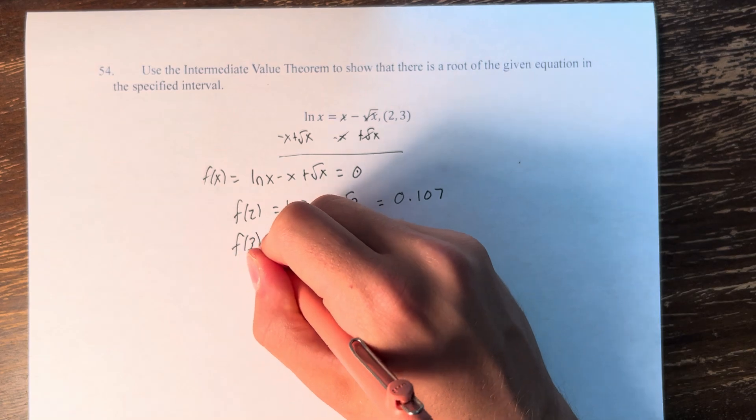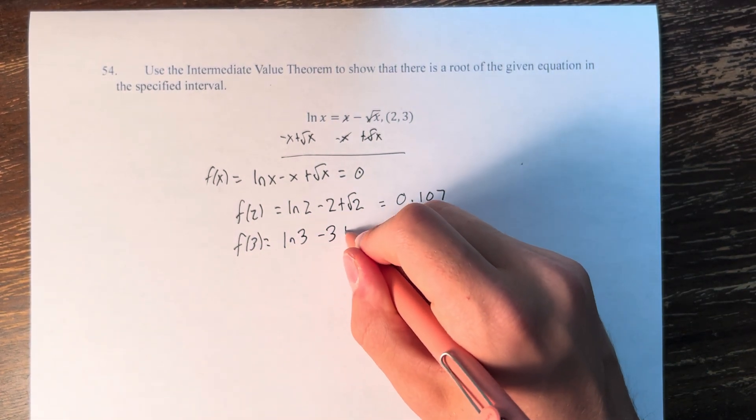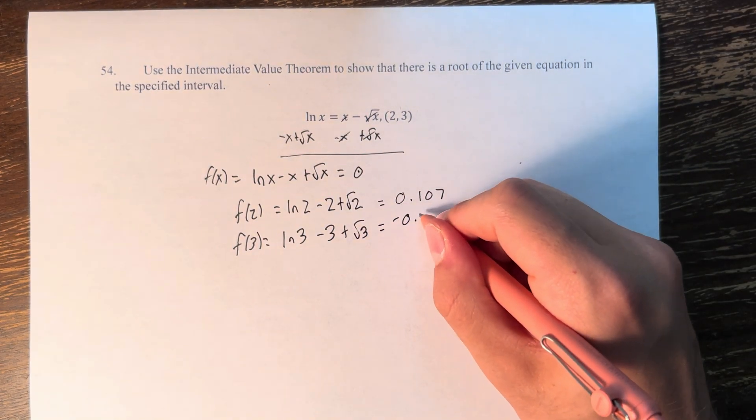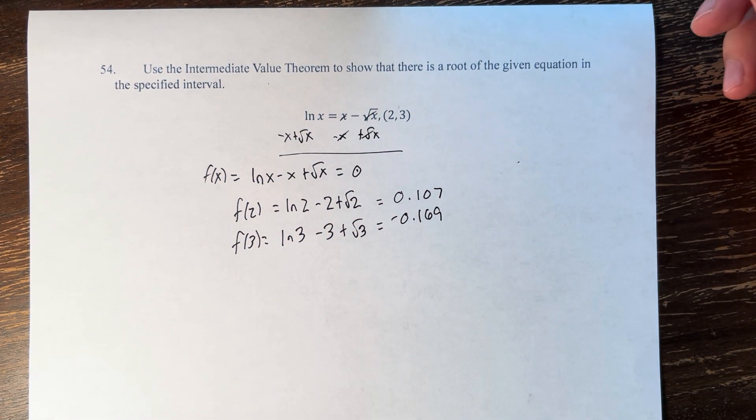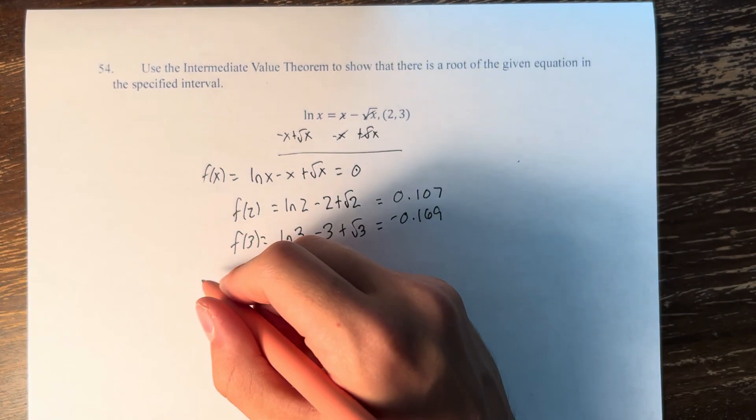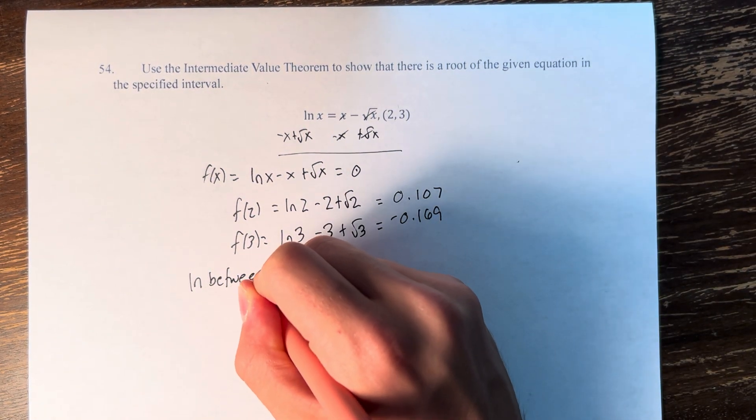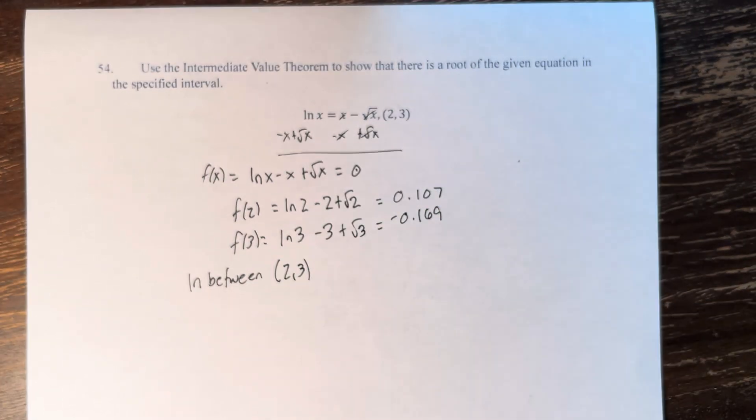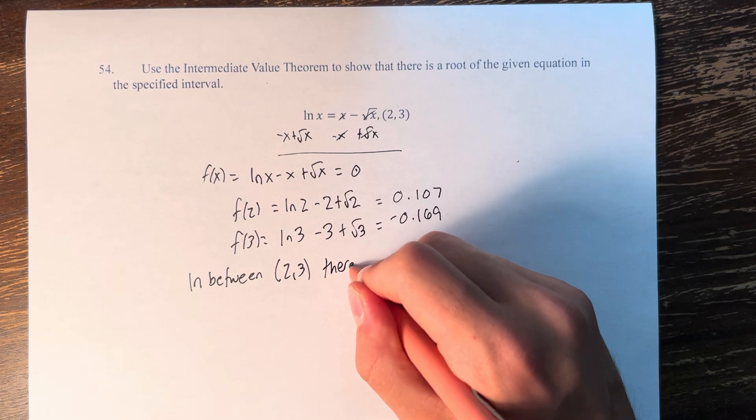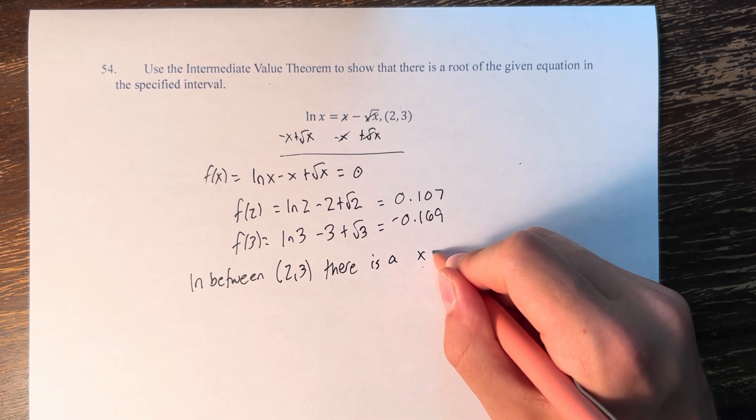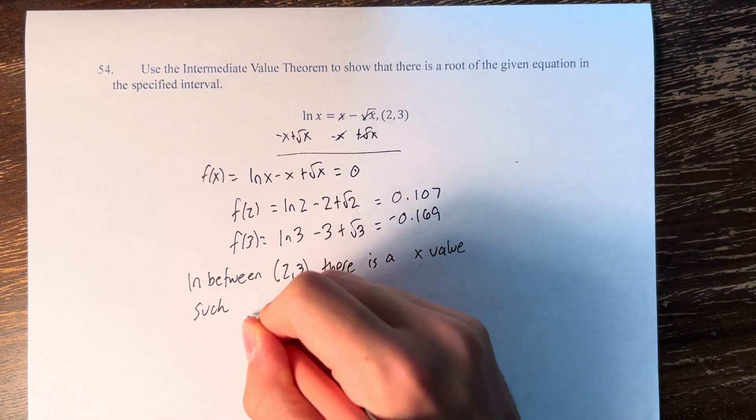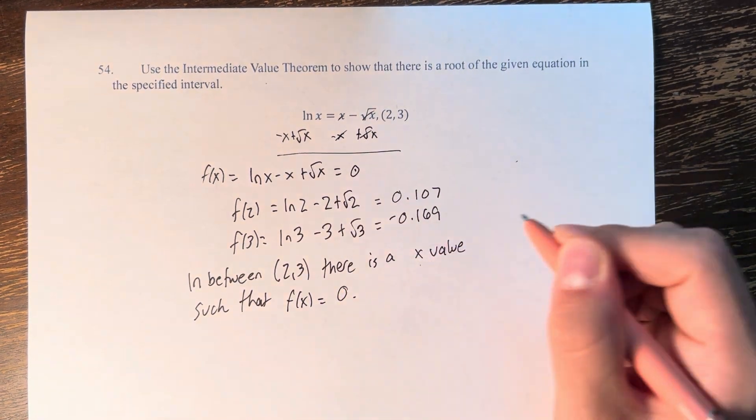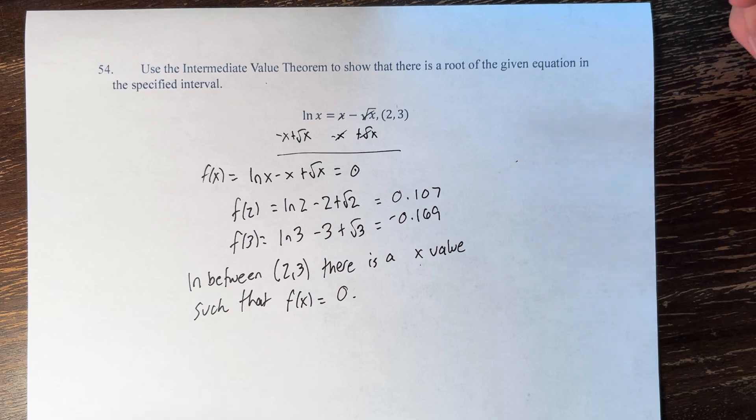And f(3) = ln 3 - 3 + √3, which is -0.169. Using the Intermediate Value Theorem, we can say that between the interval 2 and 3, there is an x value such that f(x) = 0. Therefore, there's a root of the function in the interval.